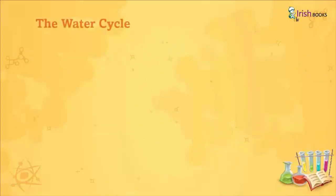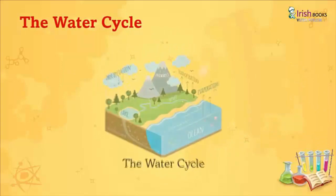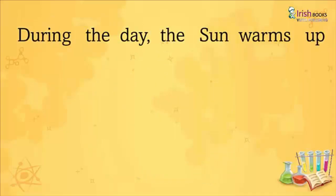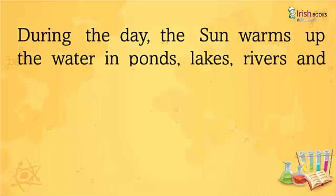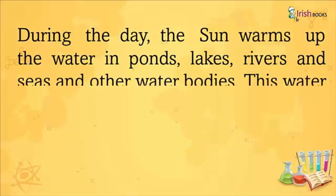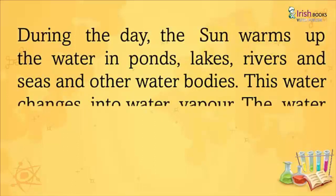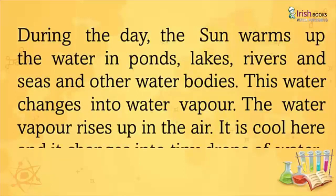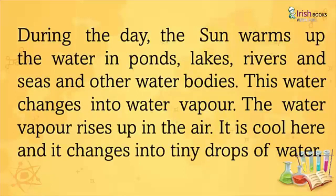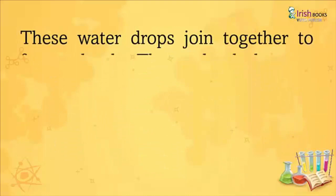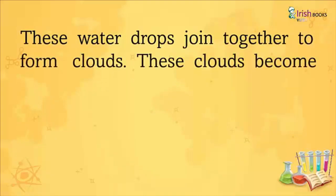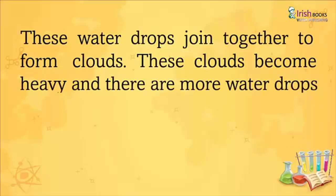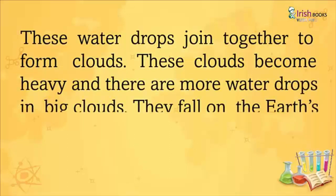The water cycle: During the day, the sun warms up the water in ponds, lakes, rivers, seas, and other water bodies. This water changes into water vapor. The water vapor rises up in the air where it is cool, and it changes into tiny drops of water. These water drops join together to form clouds. These clouds become heavy with more water drops.